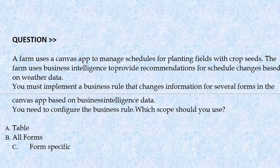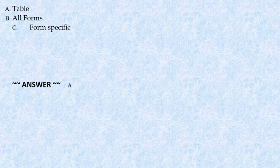Next question: A farm uses a canvas app to manage schedules for planting fields with crop seeds. The farm uses business intelligence to provide recommendations for schedule changes based on weather data. You must implement a business rule that changes information for several forms and canvas apps based on the business intelligence data. You need to configure the business rule — which scope should you use? Option A: Table. Option B: All forms. Option C: Form specific. The correct answer is option A.